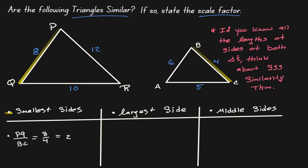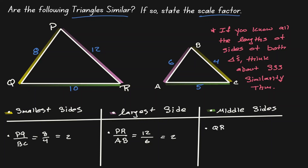Now let's compare the largest side. On the left the largest is PR with the length of 12, and on the right the largest is AB with the length of 6. So to find the proportion, let's do PR divided by AB — that gives us 12 over 6, which is 2. Now let's compare the middle sides, which in this case on the left is QR with 10, and on the right is AC with 5, giving us 10 over 5, which is 2.